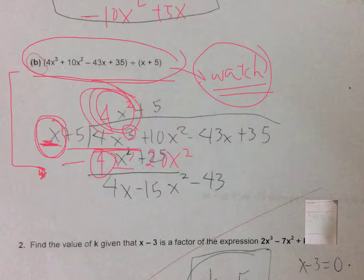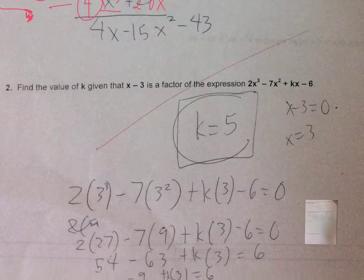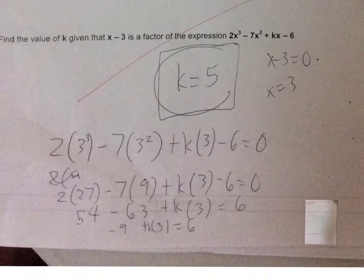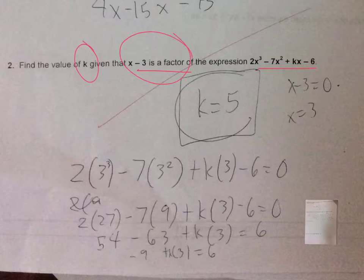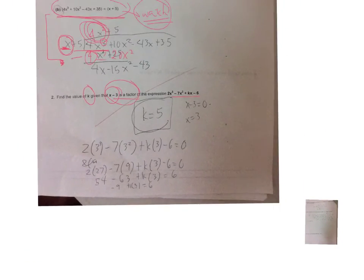In number two you were able to get it correctly, so I think you understand the idea of the factor theorem. This is a typical problem wherein you have to find k. What you did was you supplied the value x = 3 to every x and then equated it to zero. There's no problem with number two.